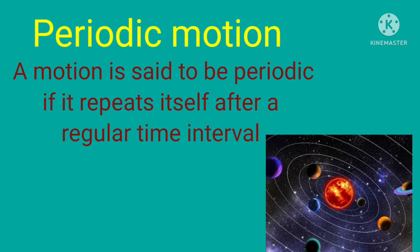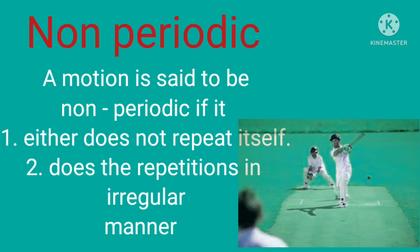Next is periodic motion. A motion is said to be periodic if it repeats itself after a regular time interval. An example is the solar system, because every satellite or planet revolves in a particular time period.